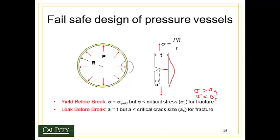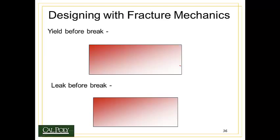Another approach is called leak before break, where we allow the crack to grow until it reaches the wall thickness — that is, the crack grows all the way through the wall to the other side — but the crack never reaches the critical crack size for fracture A_C. In this design scenario, pressure escapes through the sidewall. If the vessel contains steam, we'll see the steam coming out before it ruptures, again giving us warning that something bad is about to happen.